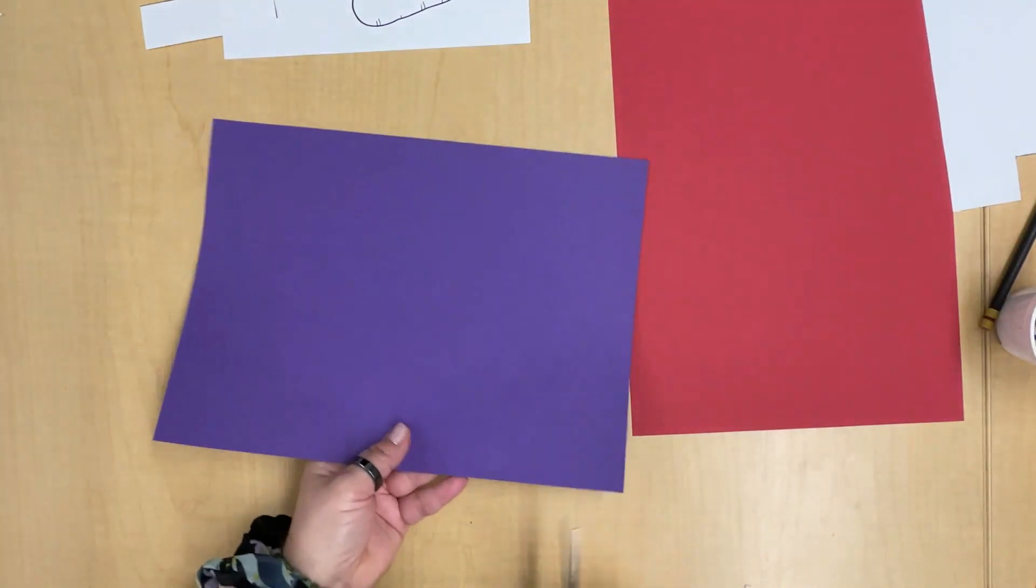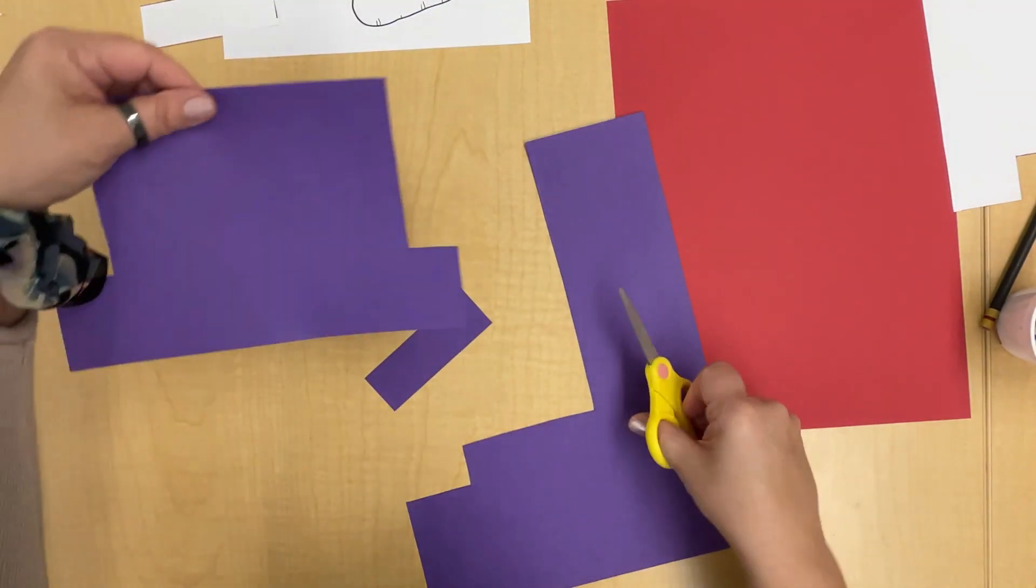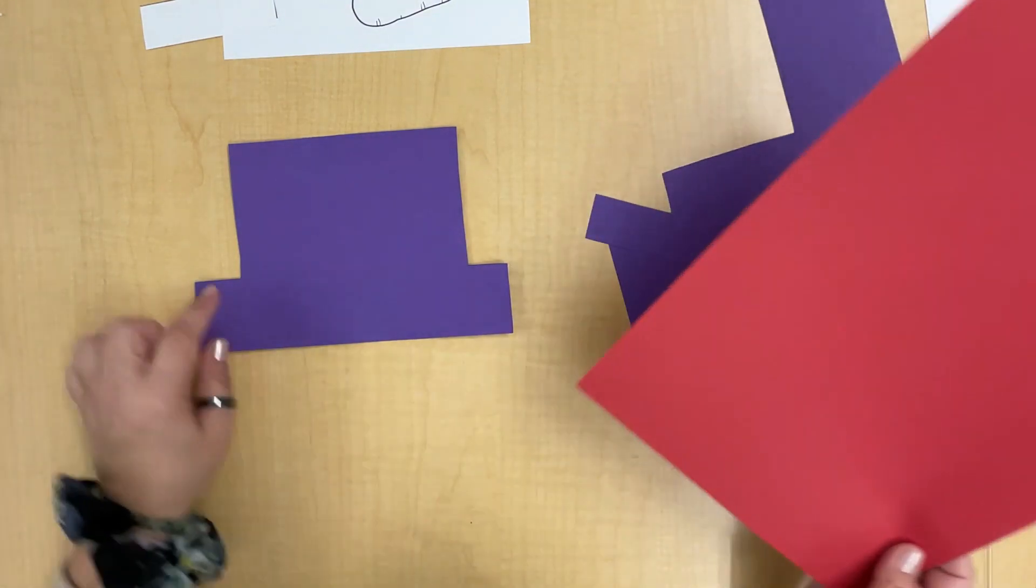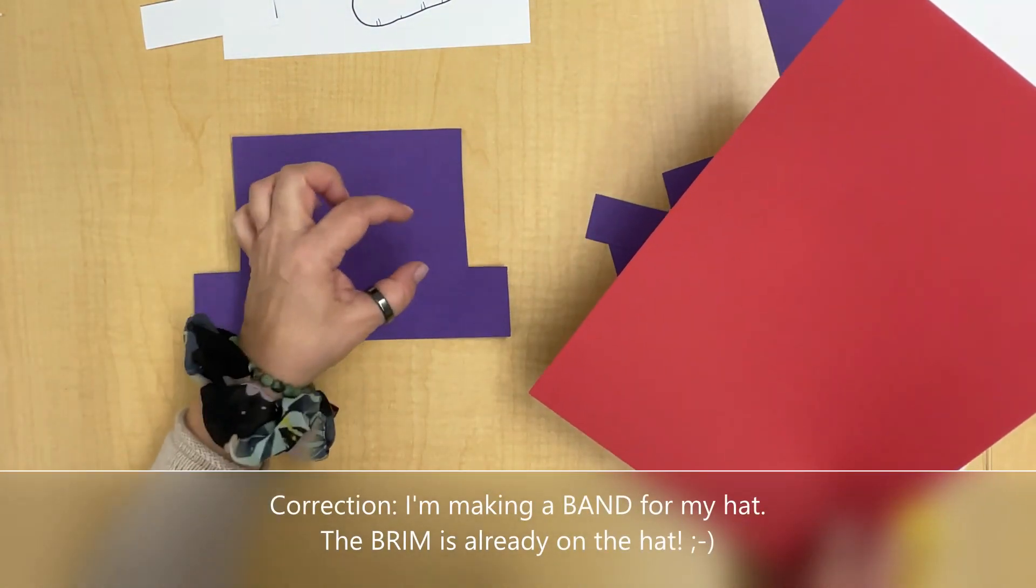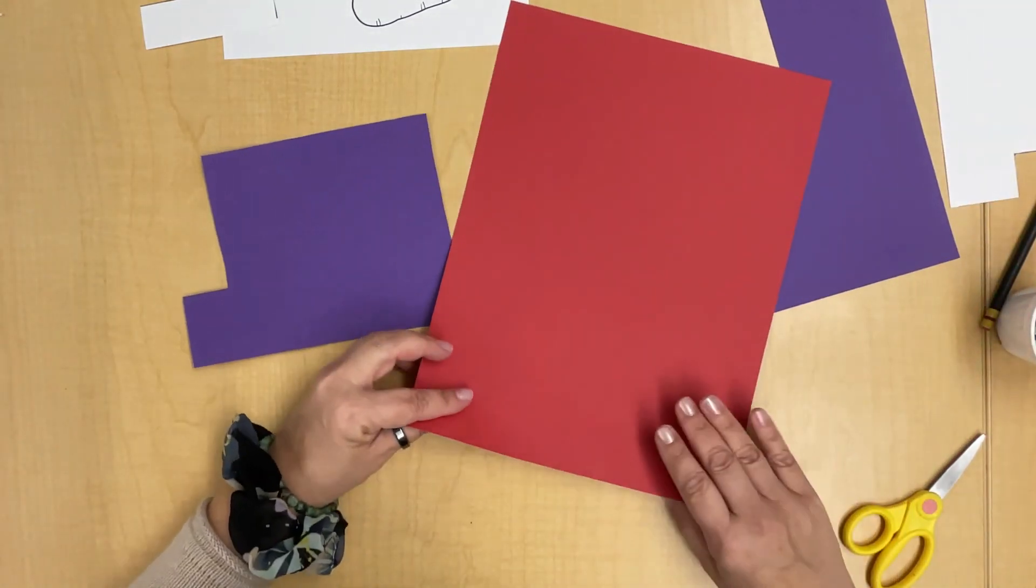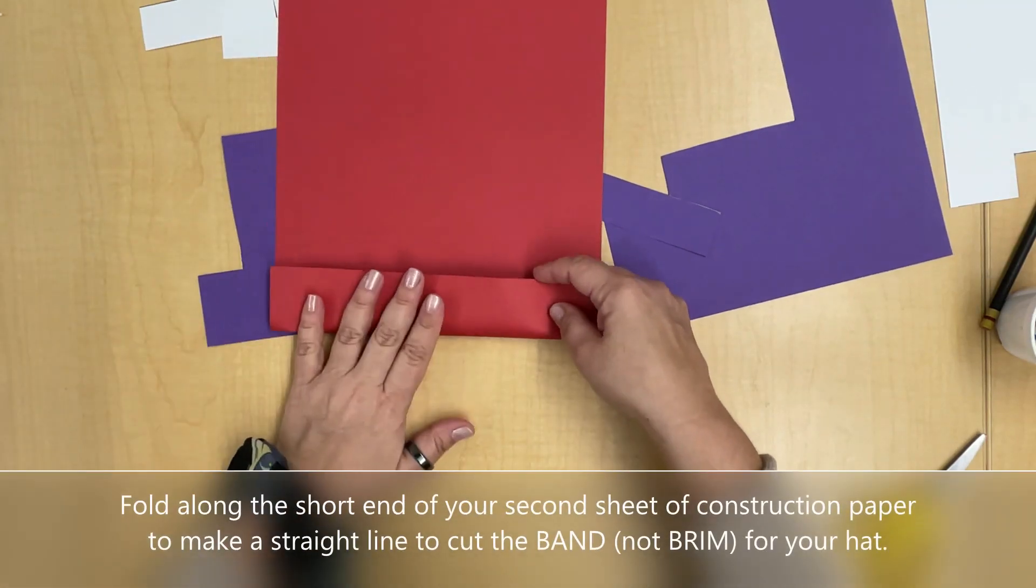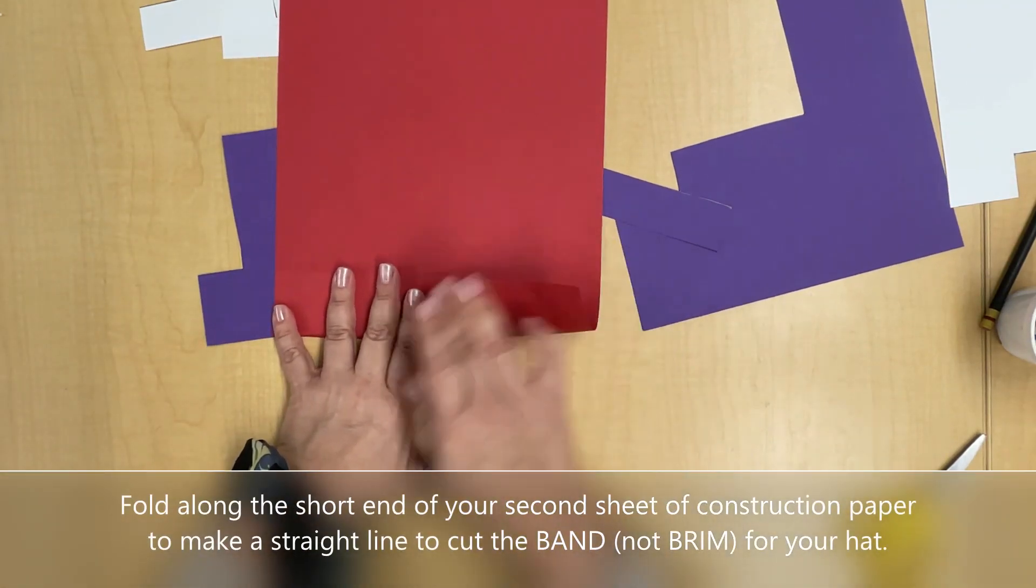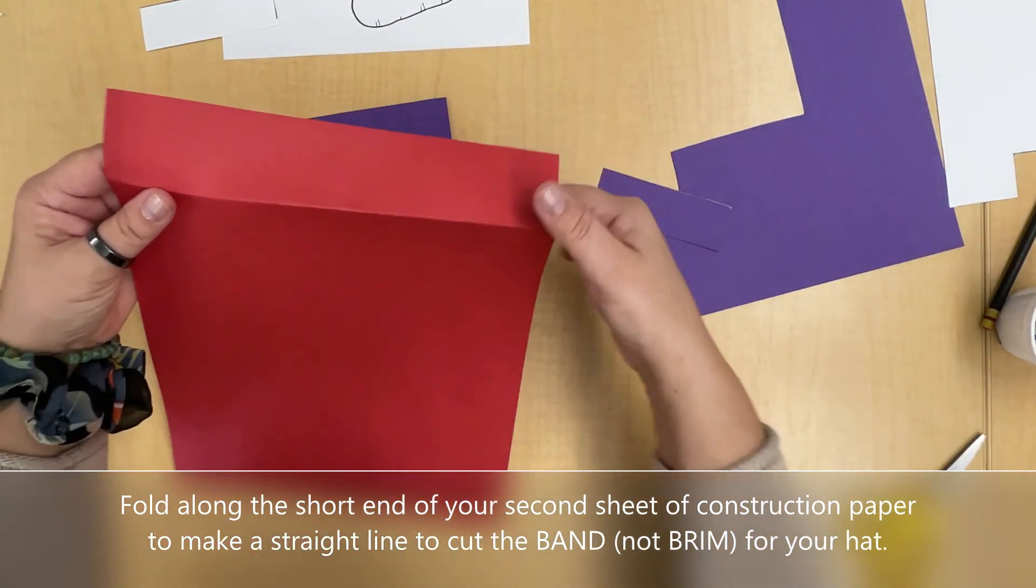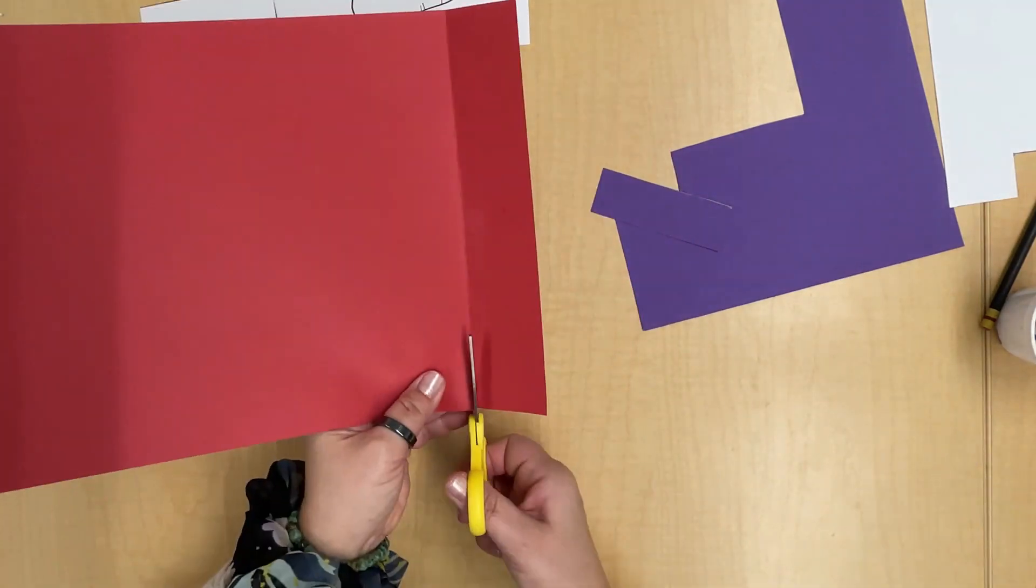Now I'll cut my hat out. So there's my hat. Now I would like to make a brim for my hat, so I'm gonna decide how thick I'd like to make it, then I am just gonna fold my other paper up. That's gonna be my brim, so I'm just gonna cut along this line.